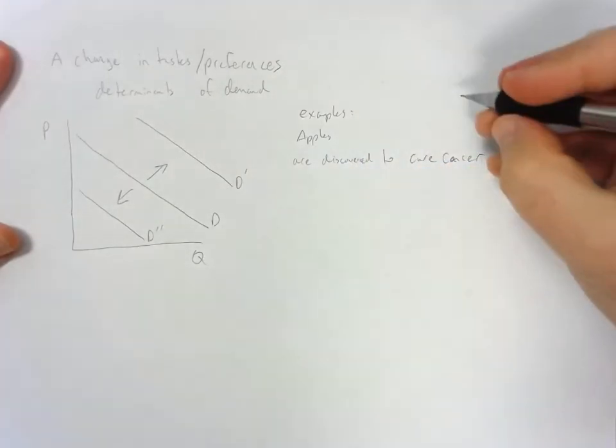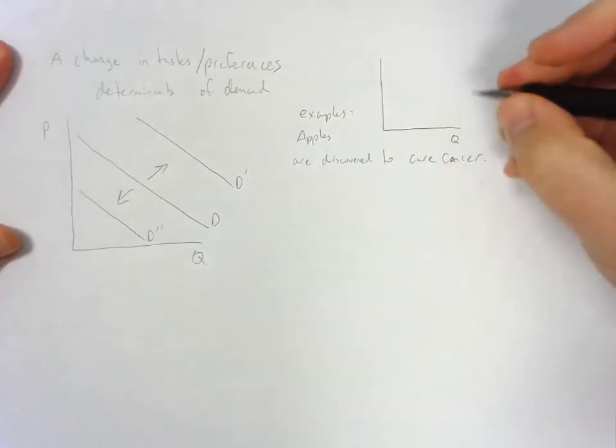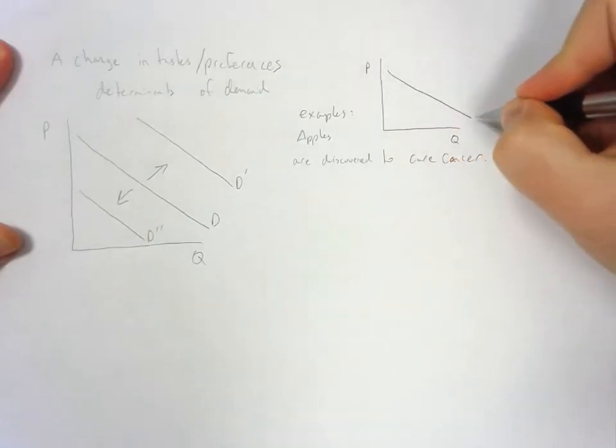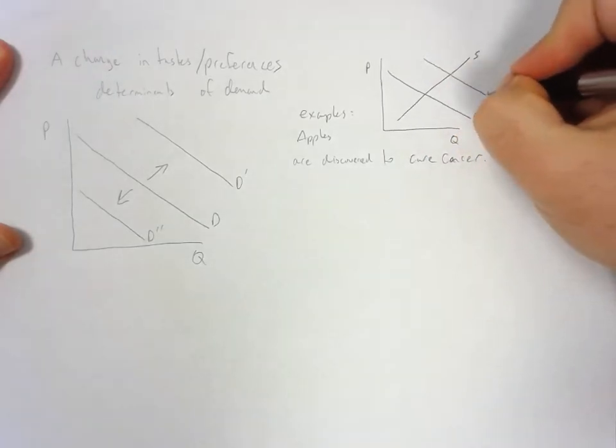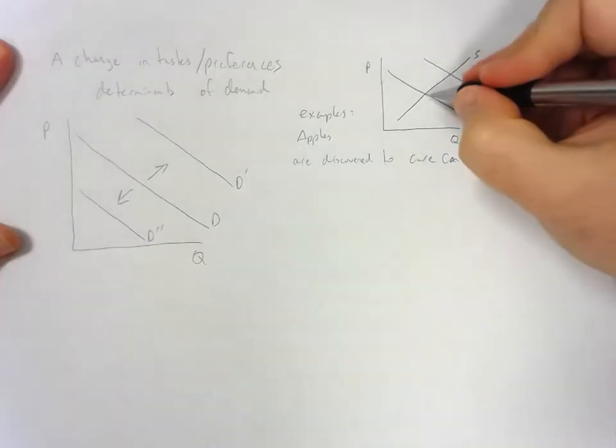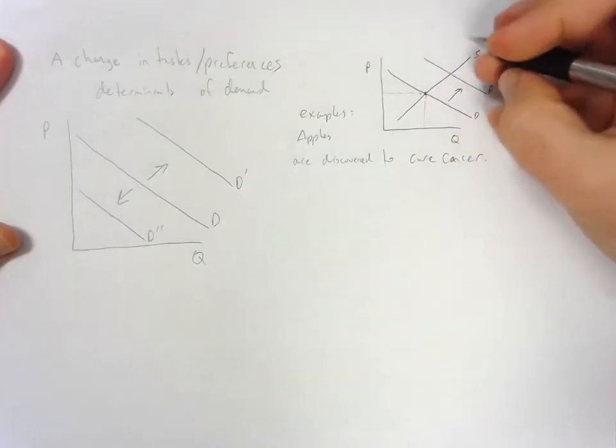So what would that look like in our supply and demand graph? Again, we have quantity and price. We have demand and supply, and an increase in demand would cause that to shift right. You can see that this is our initial equilibrium, and this is going to be our new equilibrium.